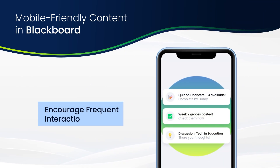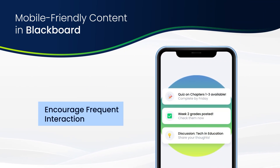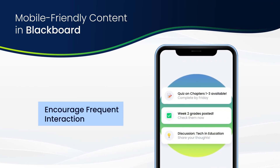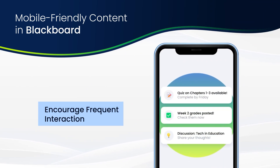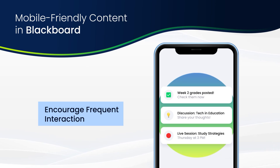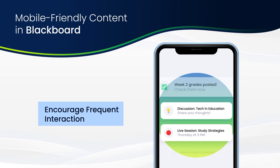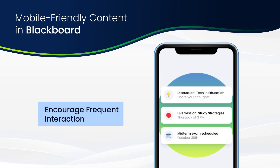Encourage frequent interaction. Make your course a regular part of students' mobile use. Announce new events like tests or grades, ask for short discussion posts that are easy to do on mobile, use accessible images and videos, and use online platforms for live sessions.